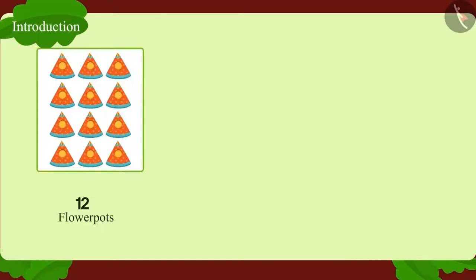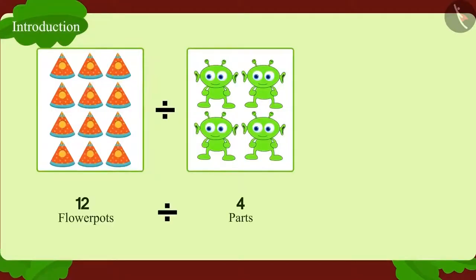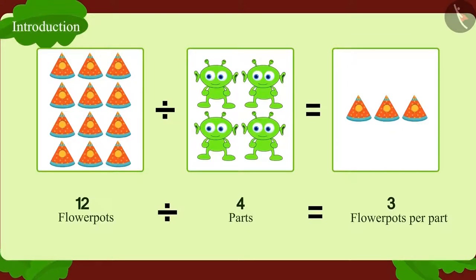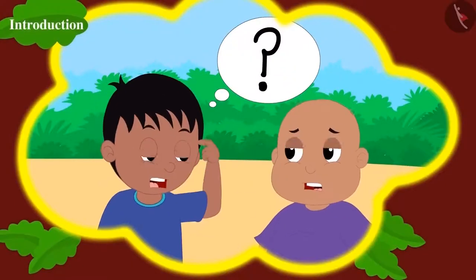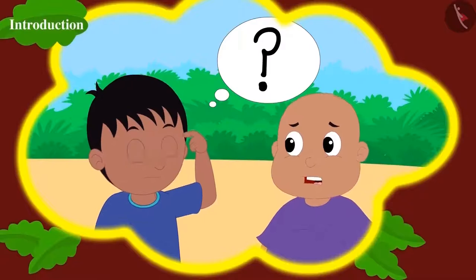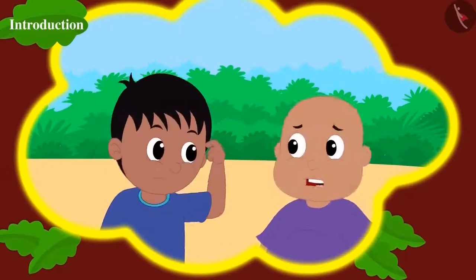How do we write it in the form of division? 12 flower pots divided into 4 equal parts is 3 flower pots in each part. Raju and Bablu are planning to buy pencils as a gift to Jeev's friends.